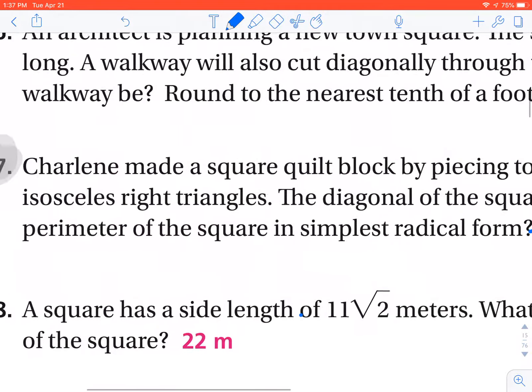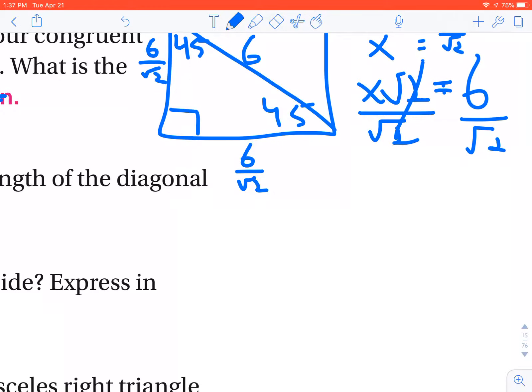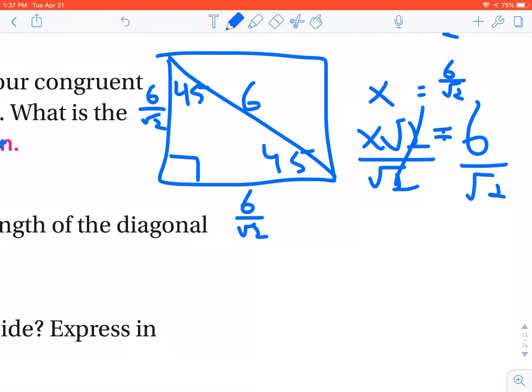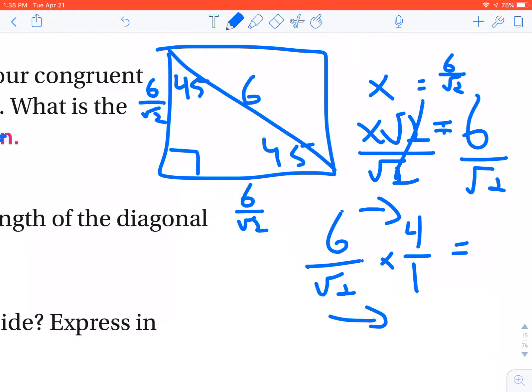Now the question was asking for the perimeter in simplest radical form. Well, the perimeter is very simple. It's just the sum of all four sides. So you could take 6 over radical 2 and add them all up. Or what I'm going to do is I'm going to treat 4 as the fraction 4 over 1. And I'm just going to multiply. I'm choosing 4 because, of course, there's four sides. So I'm taking 6 over radical 2 times 4 over 1, which gives me, multiply fractions straight across. The numerator, or the top value, becomes 24. And then the denominator is radical 2.